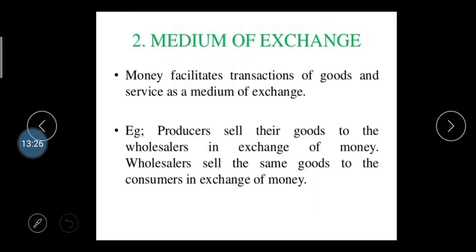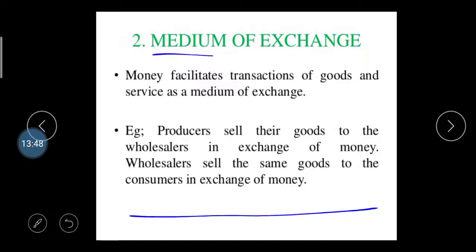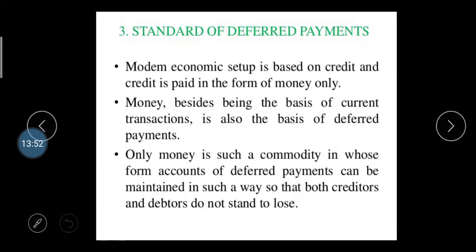Second function — money as a medium of exchange. You can easily exchange money and purchase and sell any product or service. Money facilitates the transaction of goods and services. For example, a producer sells goods to a wholesaler in exchange for money, and the wholesaler sells the same goods to the consumer in exchange for money. This is the medium of exchange function of money.